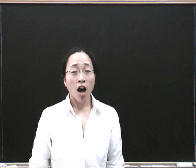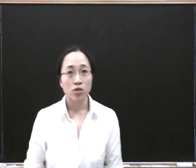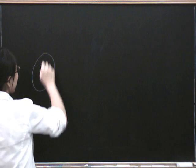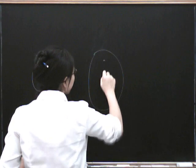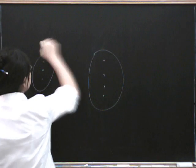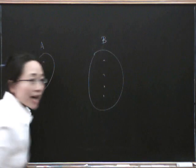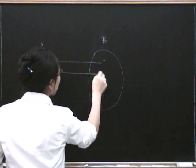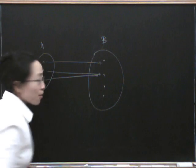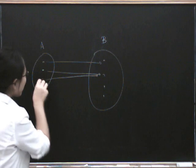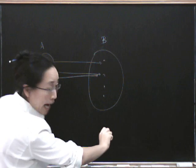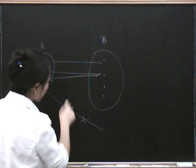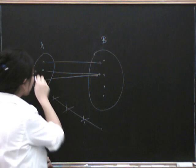Let's think a bit harder about those pictures I was drawing of functions. Here's one set of things and here's the other set of things - maybe this is a function from set A to set B. One of the most important facts about functions is that nothing is allowed to go outside the set on the right. Having something go over there is definitely not allowed.